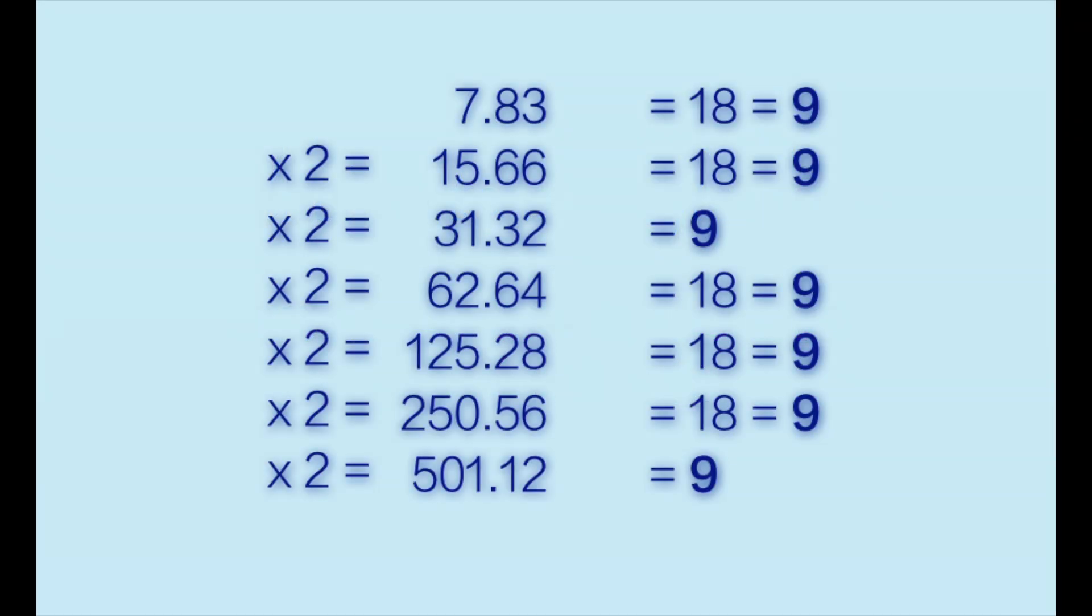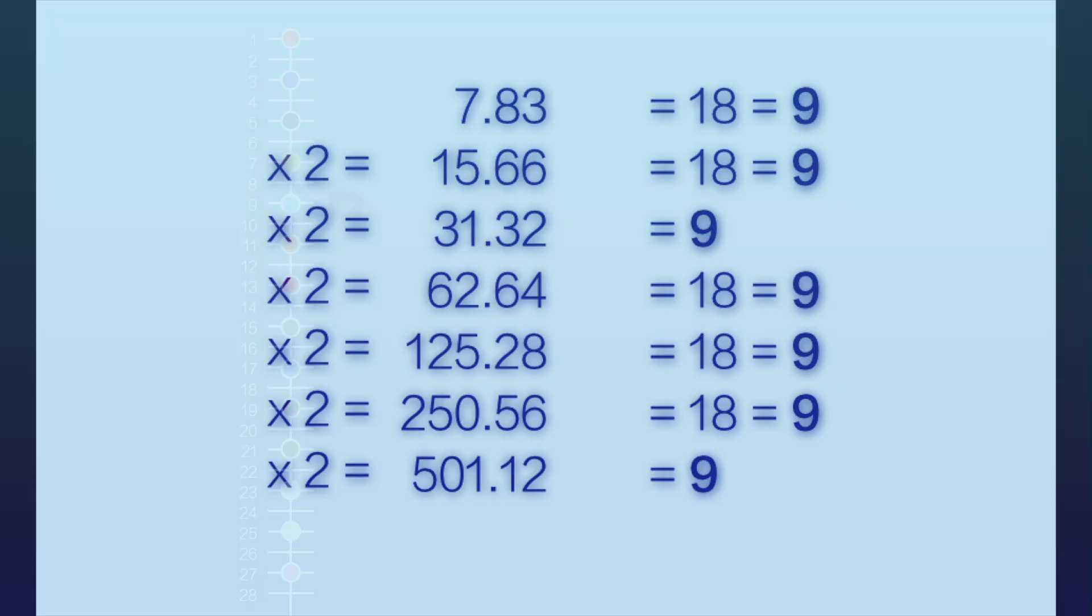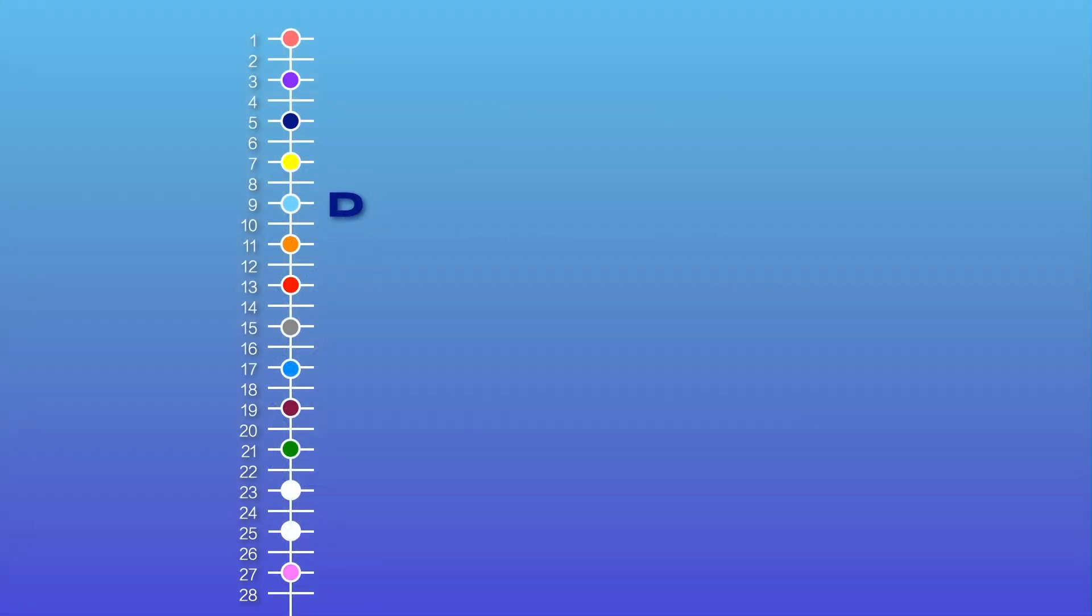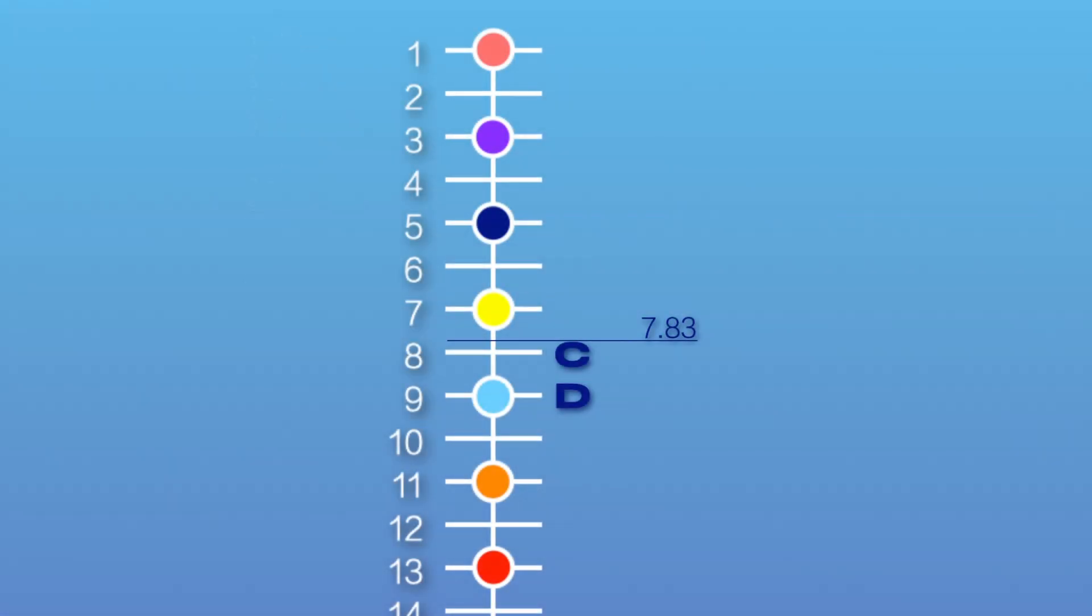Doubling through the octaves of the Schumann resonance, we find that the first 6 octaves of 7.83 produce values that all reduce to 9, which is the note of D as D enters the harmonic series at harmonic 9. The number 7.83, though, is closer to the value of harmonic 8, which is the note of C. We would say that 7.83 Hz is also a C, but a little flat.